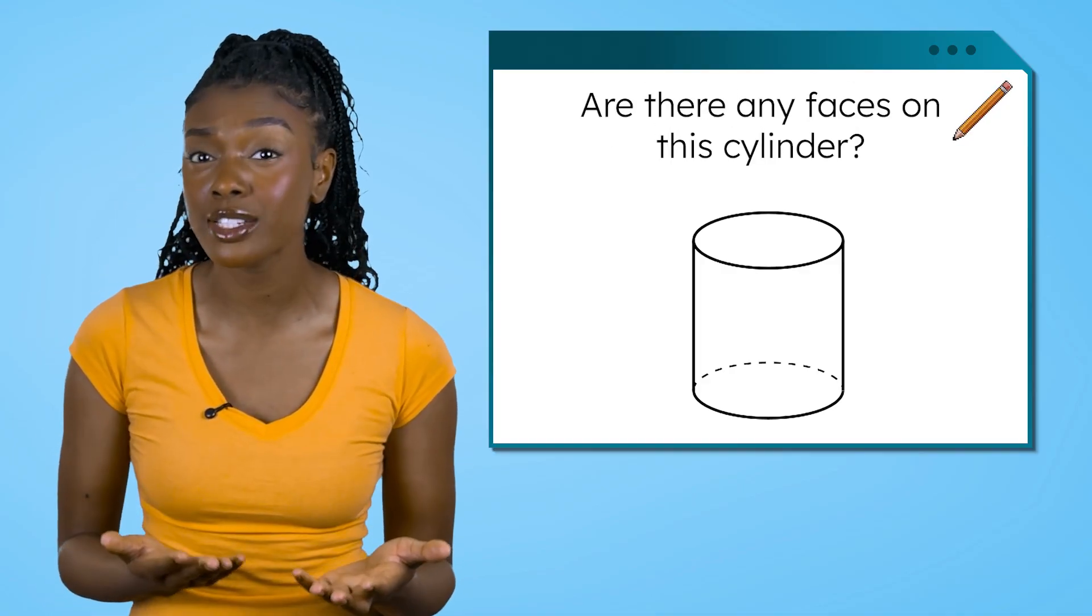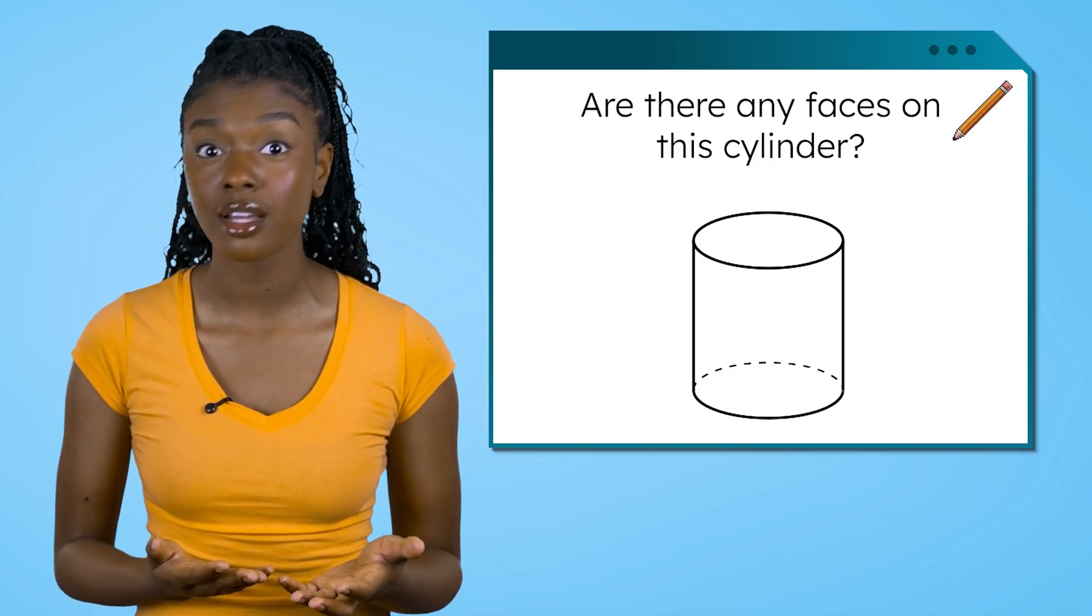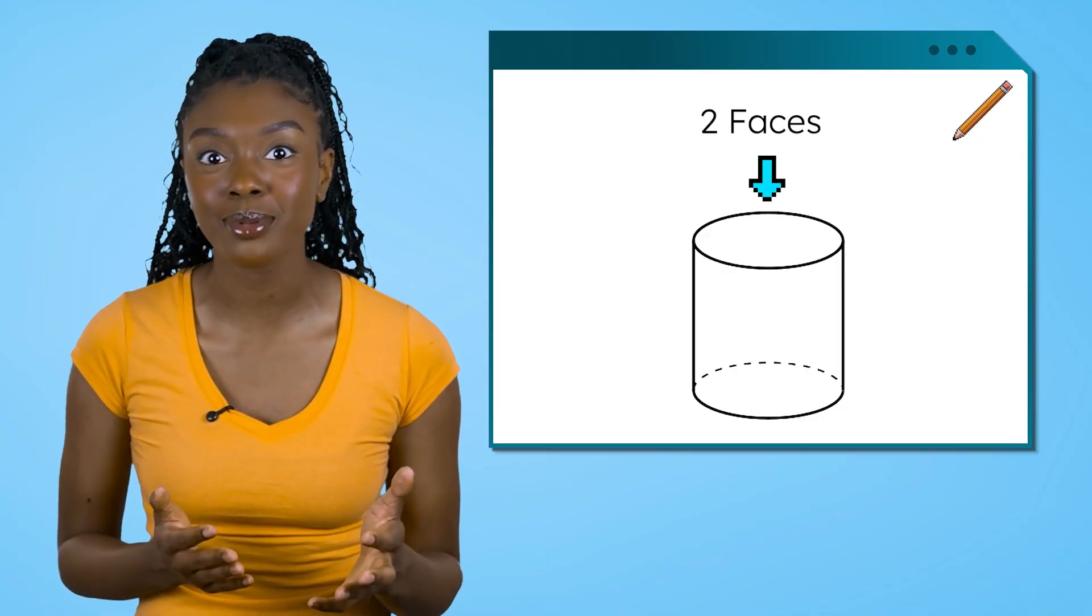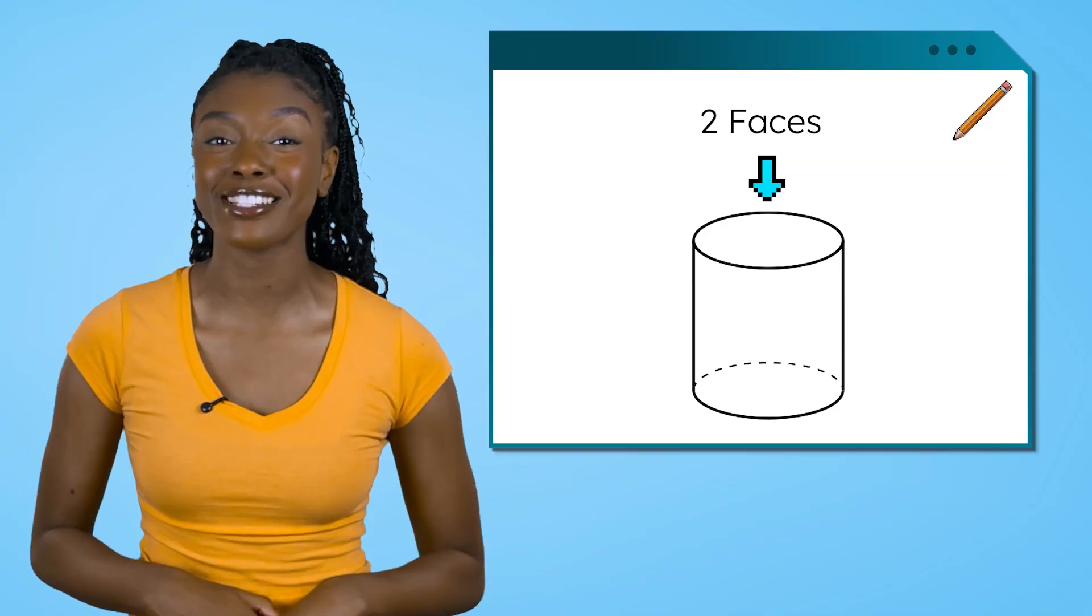Follow along with me in your guided notes. Are there any faces on this cylinder? There are two. Circles are flat 2D shapes, just like the squares on the cube, which makes them faces.